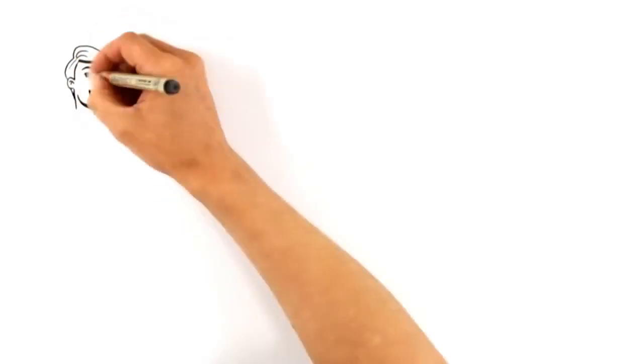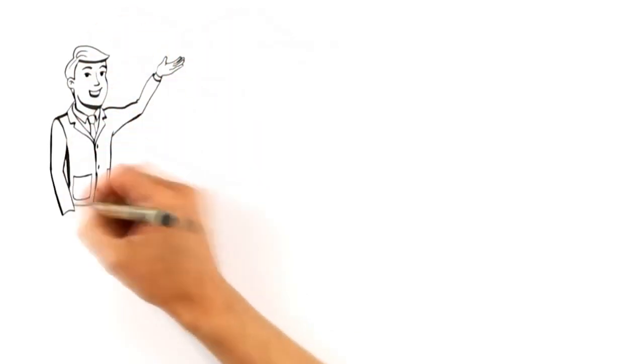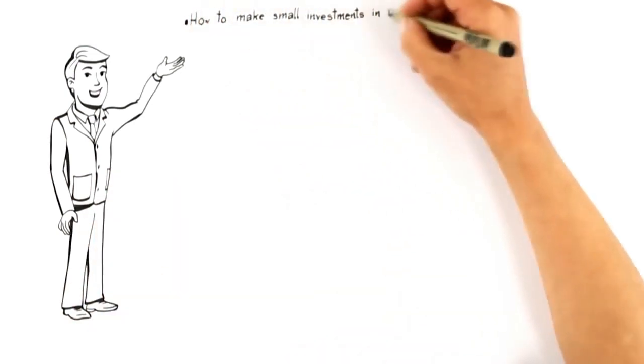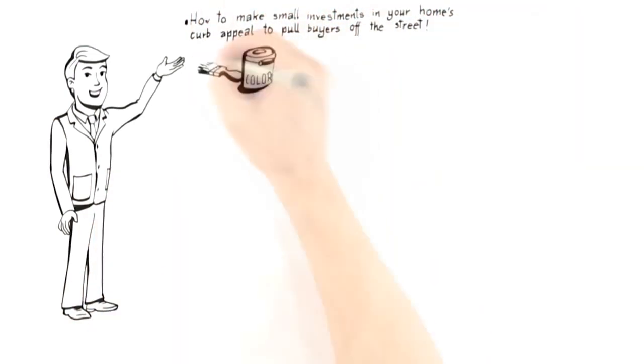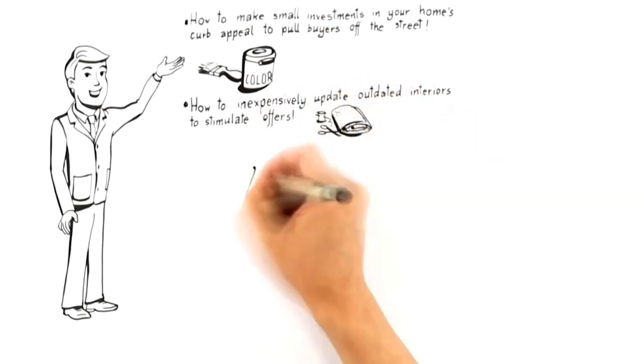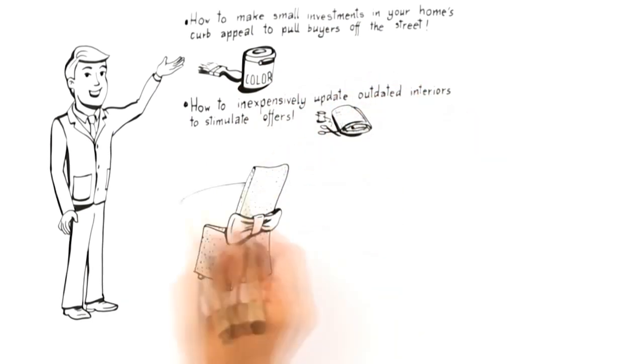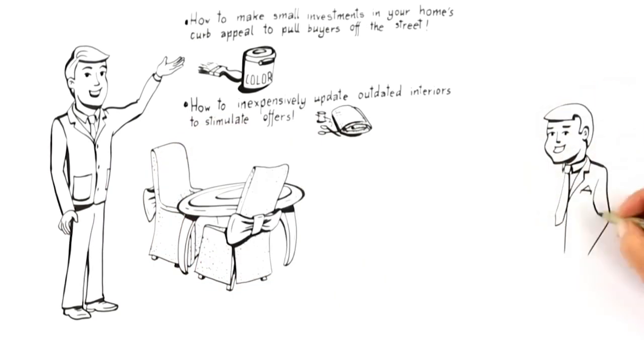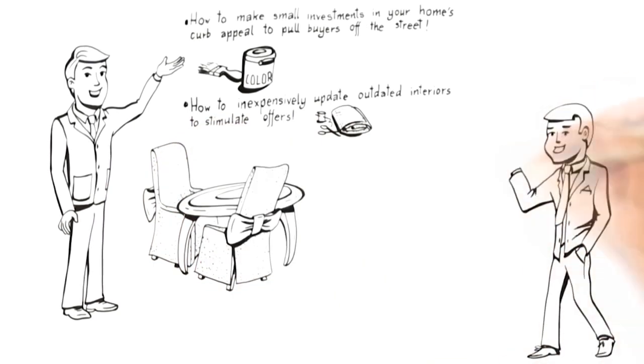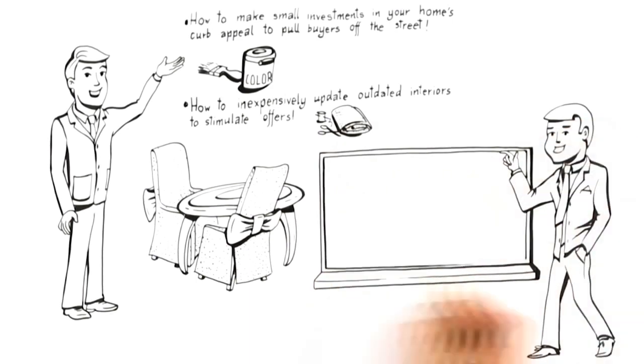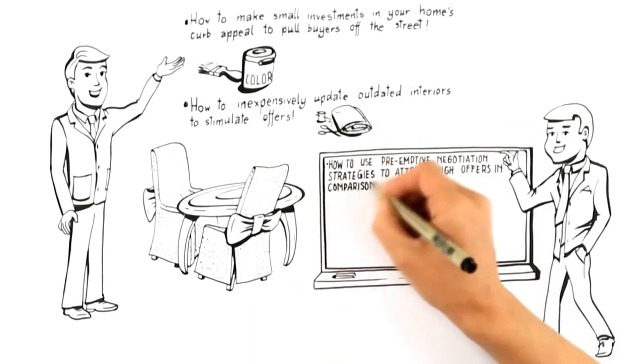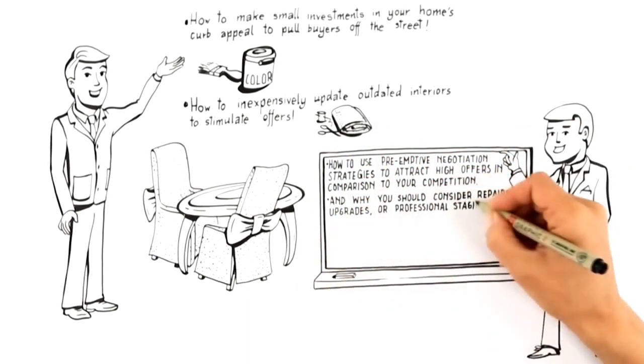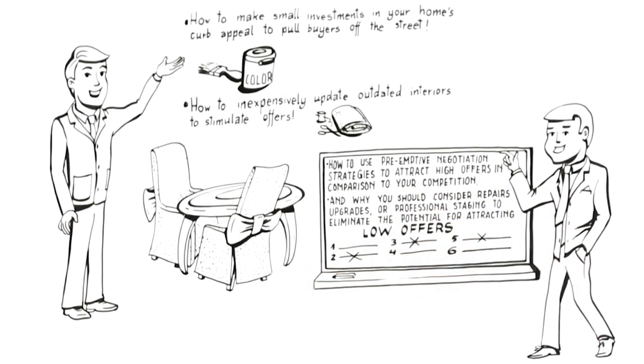This means the advice you should receive to attract buyers like this must include how to make small investments in your home's curb appeal to pull buyers off the street, how to inexpensively update outdated interiors to stimulate offers, how to use preemptive negotiation strategies to attract high offers in comparison to your competition, and why you should consider repairs, upgrades, or professional staging to eliminate the potential for attracting low offers.